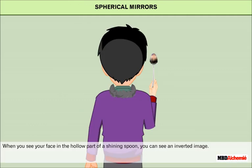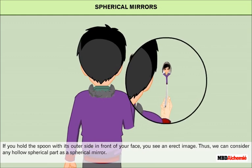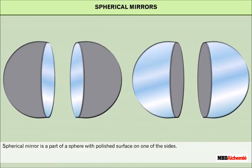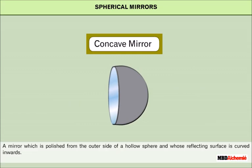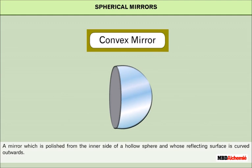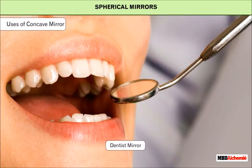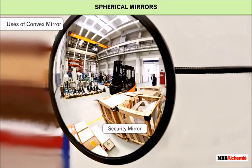Spherical Mirrors. When you see your face in the hollow part of a shining spoon, you can see an inverted image. If you hold the spoon with its outer side in front of your face, you see an erect image. Thus, we can consider any hollow spherical part as a spherical mirror. A spherical mirror is a part of a sphere with a polished surface on one of the sides. Spherical mirrors are of two types: concave mirror and convex mirror. A concave mirror is polished from the outer side of a hollow sphere and whose reflecting surface is curved inwards. A convex mirror is polished from the inner side of a hollow sphere and whose reflecting surface is curved outwards. Concave mirrors are used by dentists, as shaving mirrors, and in headlights of motor vehicles. Convex mirrors are used as rear-view mirrors in vehicles and as security mirrors.